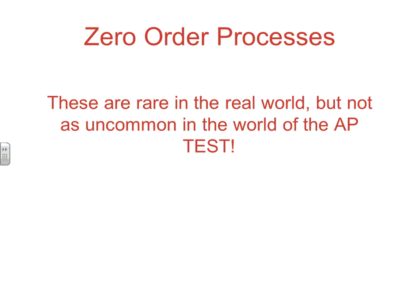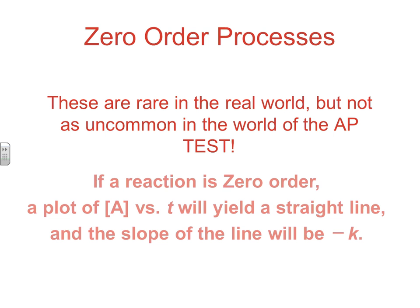Zero order processes are pretty rare in the real world, but they often appear on the AP test, so they make you look at those situations — a lot of times with hypothetical equations. If a reaction is zero order, it's the concentration of A versus time that ends up linear, which basically means concentration doesn't affect rate. The slope of this line equals negative k, meaning your rate equals k.